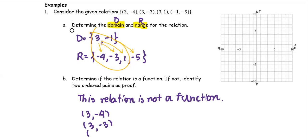There are three ordered pairs that show that the first coordinate maps to three different numbers. If we plot on the xy-plane: (3, -4), (3, -3), (3, 1), and (-1, -5), these three coordinates with x = 3 show that the relation does not pass the vertical line test.